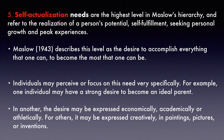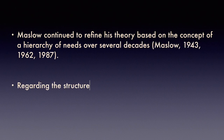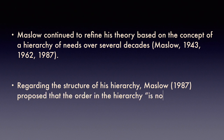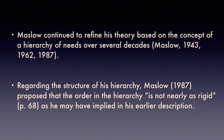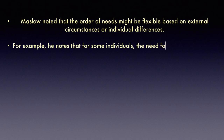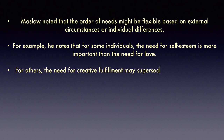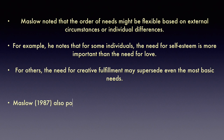Maslow did not stop with just one article published in 1943 — he kept refining the theory. In 1962 he published another paper, and in 1987 he stated that the order in the hierarchy is not nearly as rigid as implied in his earlier description, meaning it can be different for different people. Maslow further noted that the order of needs might be flexible based on external circumstances or individual differences. For example, for some people esteem needs may be more important than love, and for others the need for creative fulfillment may supersede even the most basic needs.